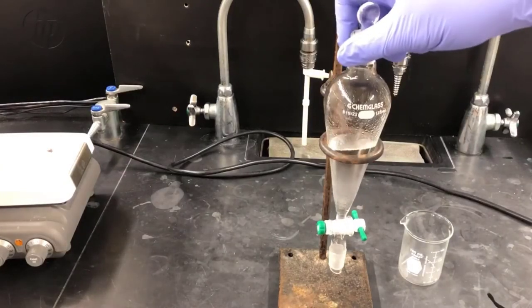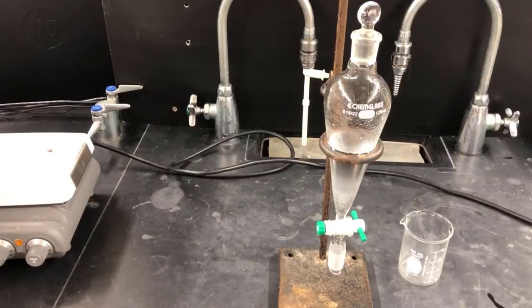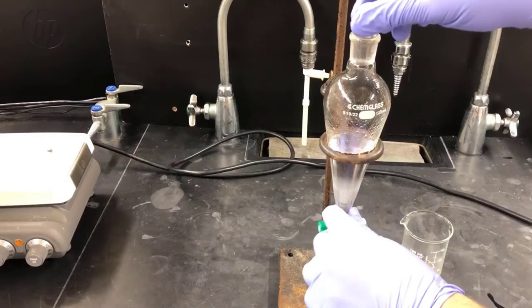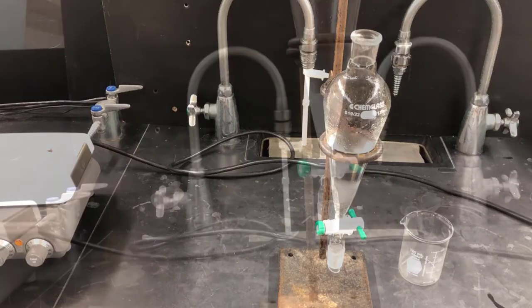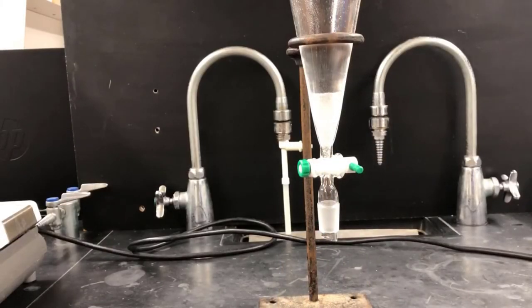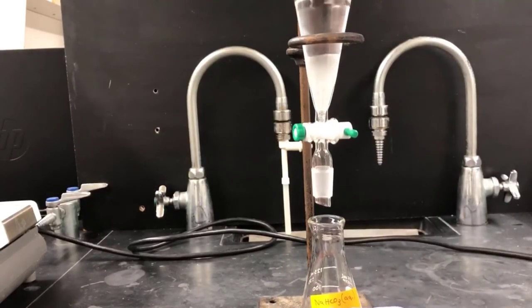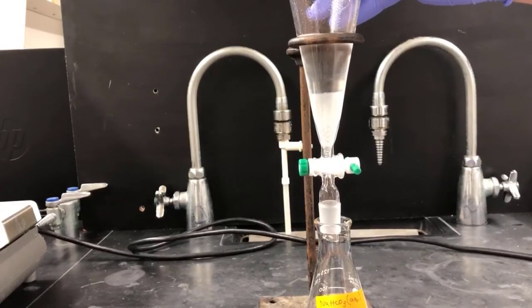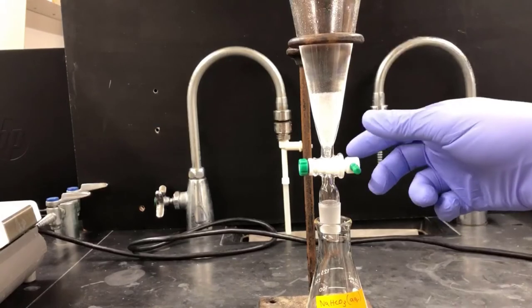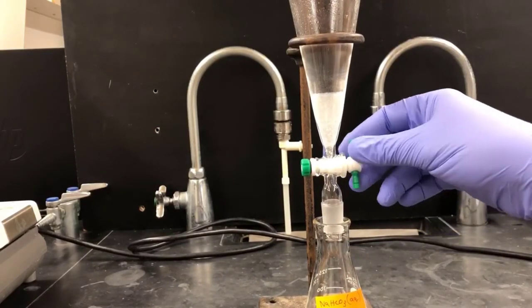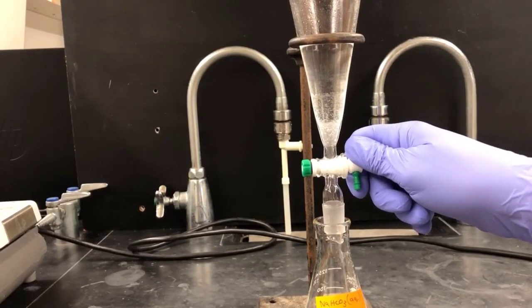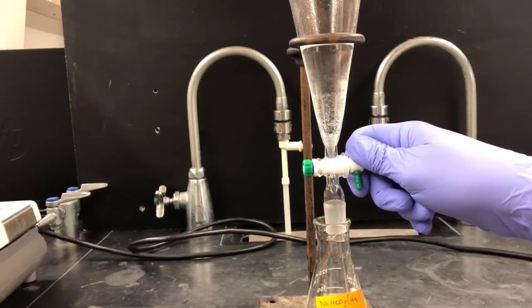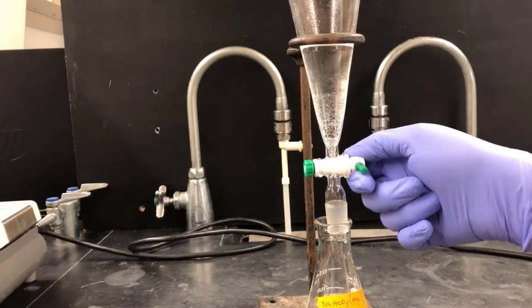Once the layers have settled, I'll drain the bottom layer out the bottom. But first I need to take the stopper out of the top. If you don't do this, the funnel gets vapor locked, and nothing will drain out the bottom. Here I'm placing a clean labeled Erlenmeyer flask under the bottom of the separatory funnel, and I'll drain the lower layer into it. I'll turn the stopcock to get the lower phase flowing out the bottom. As the phase boundary moves into the lower part of the separatory funnel, I'll start turning the stopcock off to slow down the flow. I want to shut it off at the point where the upper phase just starts to enter the stopcock valve.